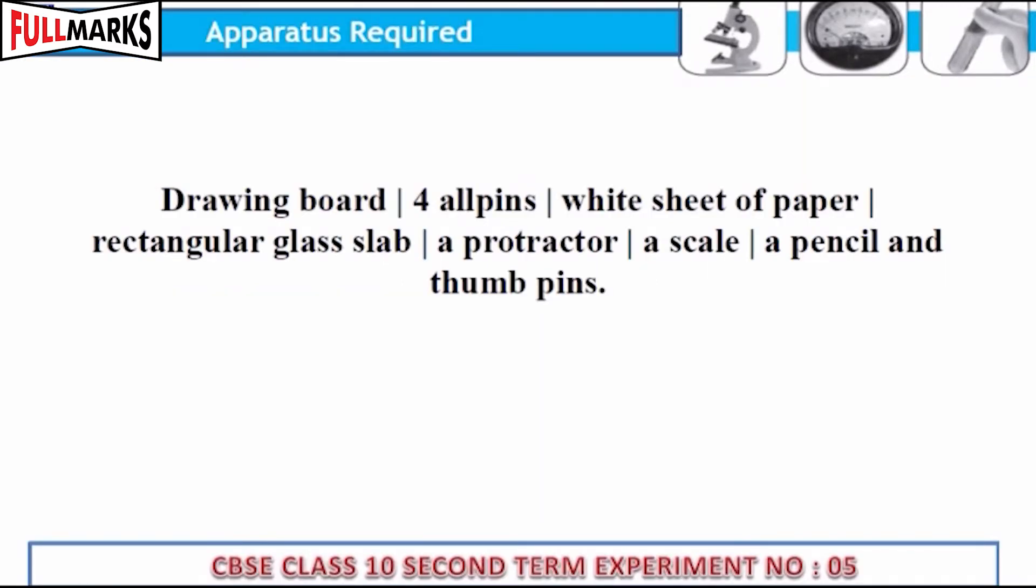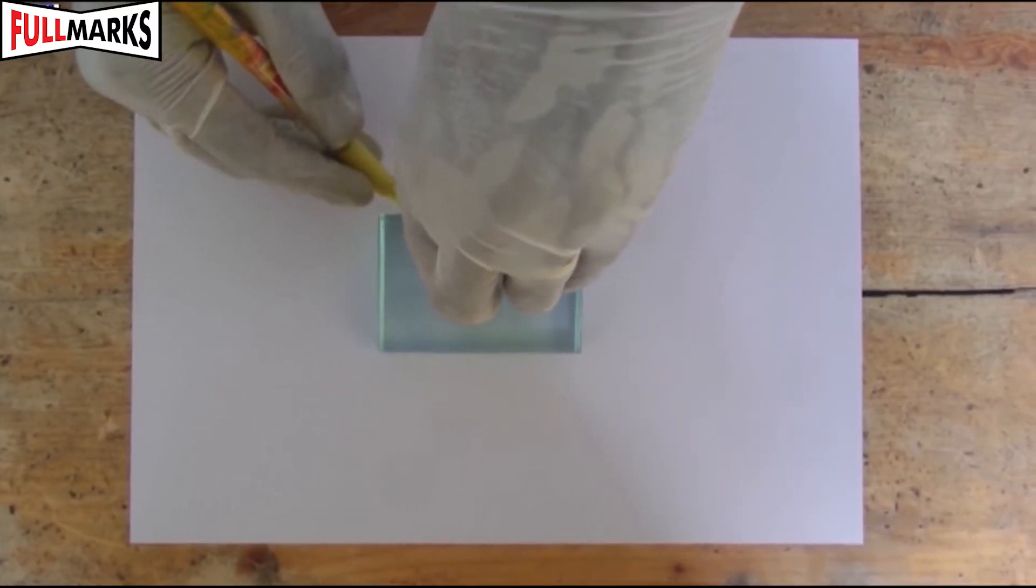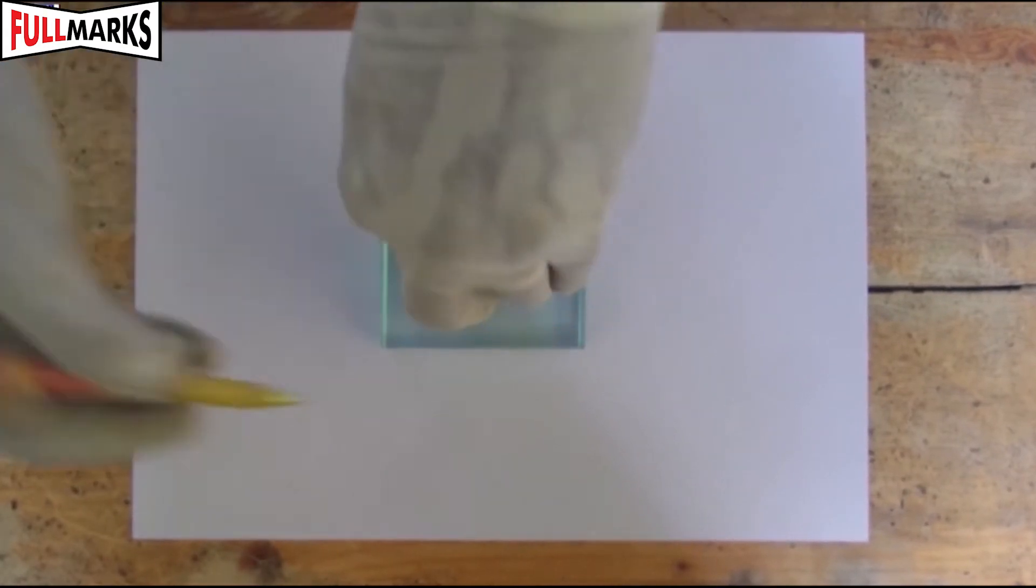Apparatus required: A drawing board, four pins, white sheet of paper, rectangular glass slab, a protractor, a scale, a pencil, and thumb pins. Procedure: Take a soft drawing board, fix a white sheet on it with the help of thumb pins.